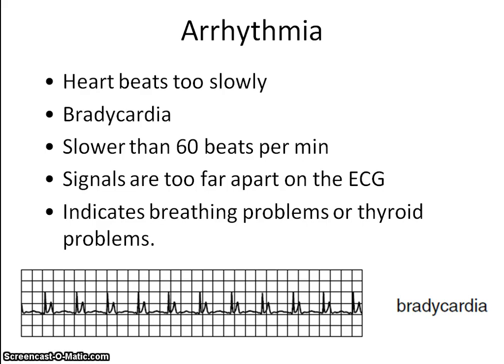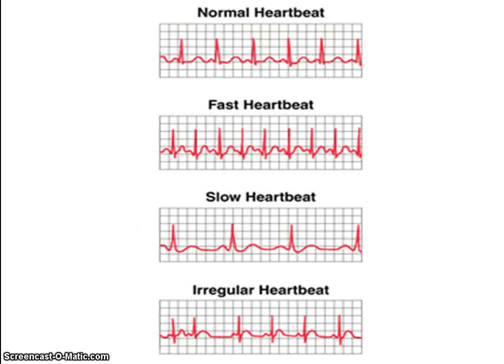Another example of arrhythmia is where the heartbeat is too slow — bradycardia — less than 60 beats per minute. In this case, the signals are too far apart. So the ECG can be helpful in diagnosing problems, showing the normal pattern, too fast for tachycardia, too slow for bradycardia, and an irregular pattern.